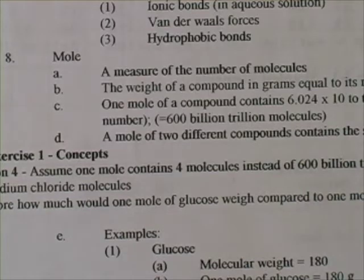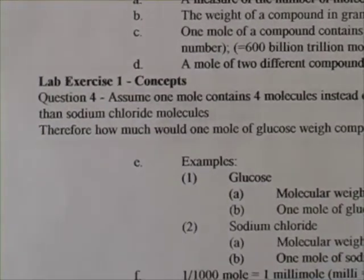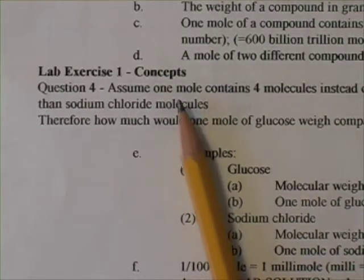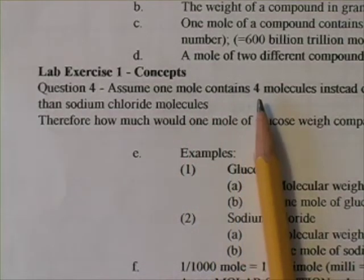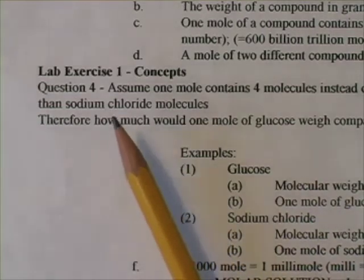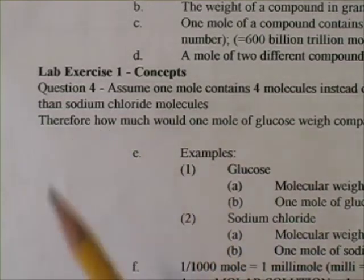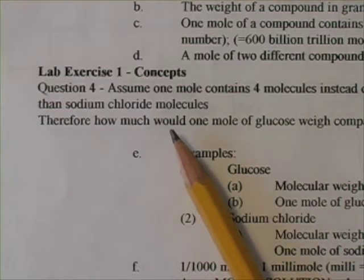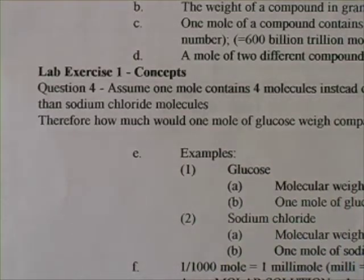Now that's not a difficult idea to grasp. Consider something a little different. Let's assume a mole has only four molecules instead of 600 billion trillion. And let's assume, which is correct, glucose molecules are bigger than sodium chloride molecules. If you were to weigh out a mole of glucose, wouldn't it weigh more because they're bigger than the mole of sodium chloride?